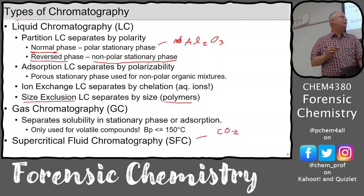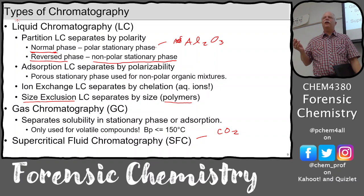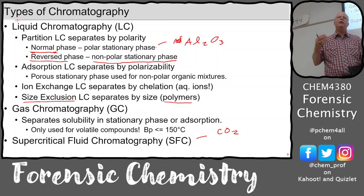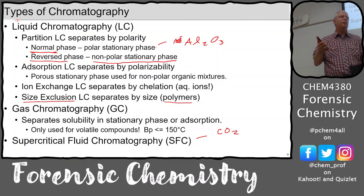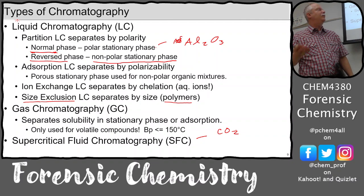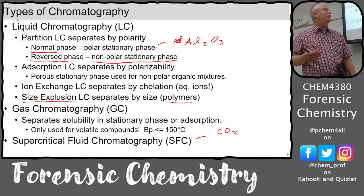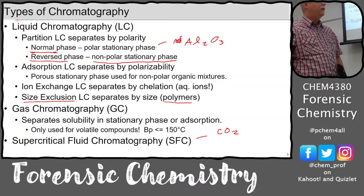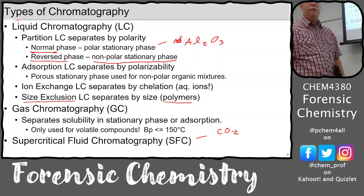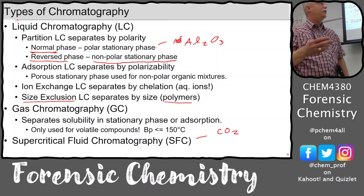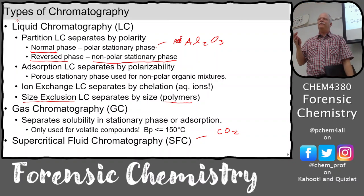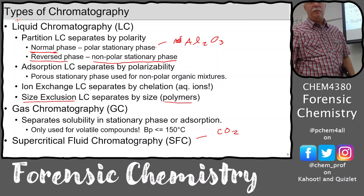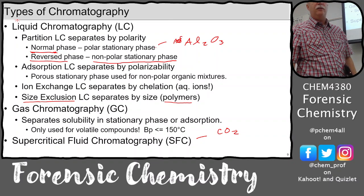You can separate ions using ion exchange liquid chromatography. For polymers, size exclusion or gel permeation chromatography uses porous columns where polymers get trapped in pores and elute slower — big polymers go right through, little polymers get stuck. There's also supercritical fluid chromatography using supercritical CO₂ as the mobile phase. CO₂ at high pressures can behave like a liquid; above the critical pressure and critical temperature you have the supercritical fluid region. You can get CO₂ into a supercritical state without too dangerous a pressure system.